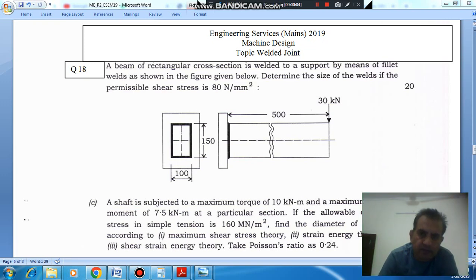Hello, welcome again. We are solving some conventional questions of machine design. Topic is welded joints. Question number 18 from Engineering Services Main 2019 is: A beam of rectangular cross-section is welded to a support by means of fillet welds as shown in the figure given below.